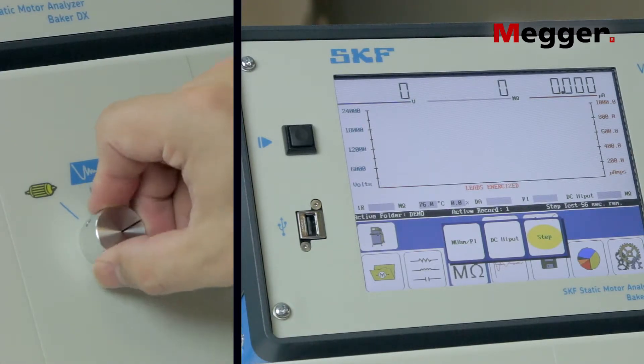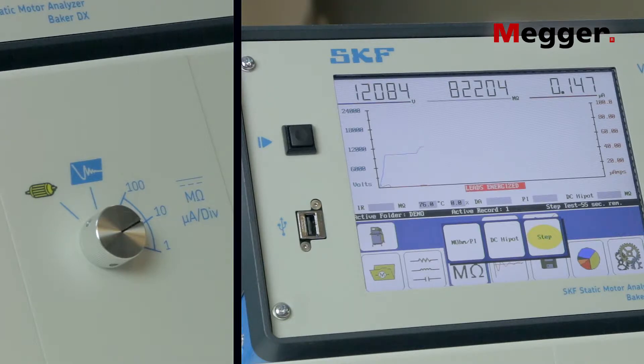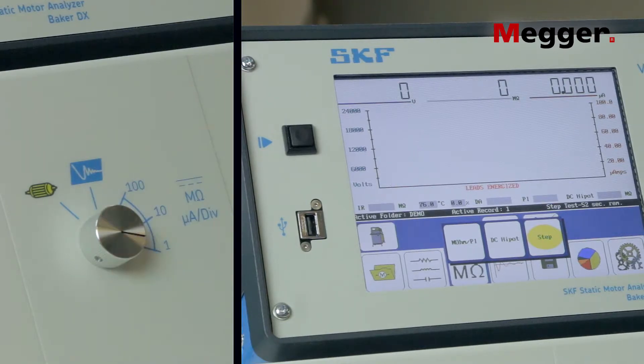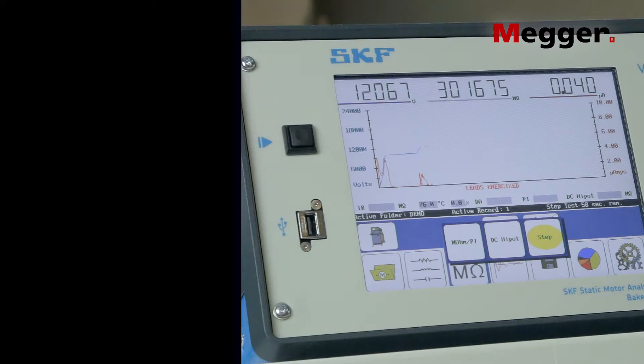Again, adjust the current scale with the function knob as before. Continue this procedure for all steps.